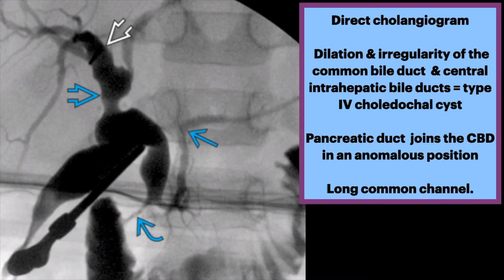In this separate case, a direct cholangiogram shows dilation and irregularity of the common bile duct and central intrahepatic bile ducts, consistent with a type 4 choledochal cyst. The pancreatic duct then joins the common bile duct in an anomalous location, creating a long common channel.